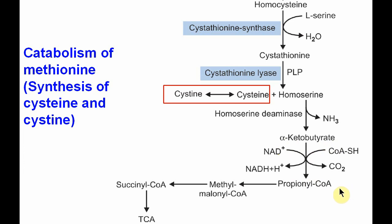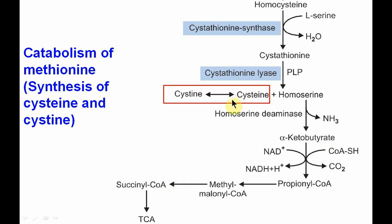Homoserine undergoes a deamination reaction to form alpha-ketobutyrate, which upon decarboxylation forms propionyl coenzyme A. This propionyl CoA through a series of reactions enters the TCA cycle and further into the gluconeogenic pathway — that is why methionine and cysteine are both glucogenic amino acids.